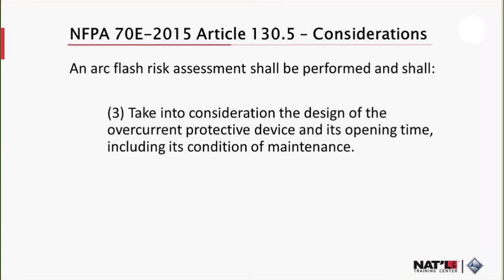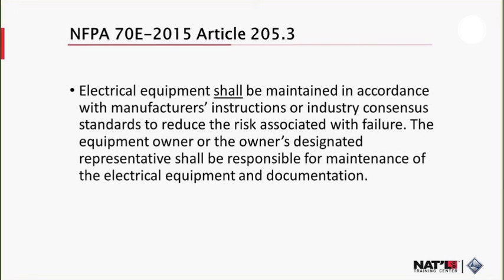Maintenance is required in order to ensure the equipment is maintained in a safe condition. Electrical equipment shall be maintained in accordance with manufacturer's instructions or industry consensus standards to reduce the risk associated with failure. The equipment owner or the owner's designated representative shall be responsible for maintenance of electrical equipment and documentation. This comes from Article 205.3 of NFPA 70E.